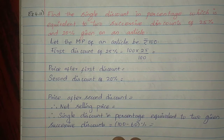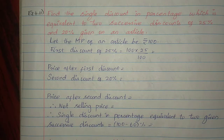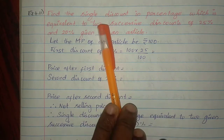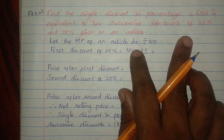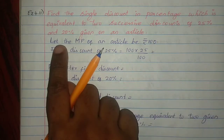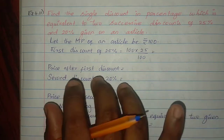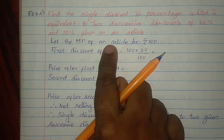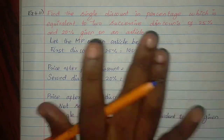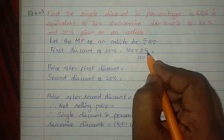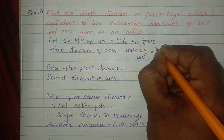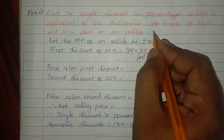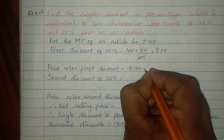Find the single discount in percentage which is equivalent to two successive discounts of 25% and 20% given on an article. Let the market price of an article be Rs. 100. First discount is 25%, so 100 into 25% equals Rs. 25. After first discount, price becomes Rs. 100 minus Rs. 25 equals Rs. 75.